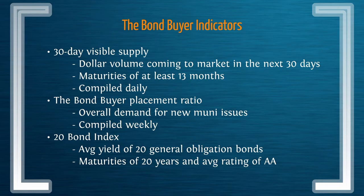There are Bond Buyer Indicators commonly used, a couple of which tell us about supply and demand balance and what's coming to market. We have the 30-day visible supply, which covers issuances coming to market in the next 30 days with maturities of at least 13 months. There's the Bond Buyer Placement Ratio, which gives an idea of the supply and demand balance and is compiled weekly. Then the 20 Bond Index, which looks at 20 general obligation bonds that are 20 years with an average rating of AA.